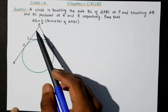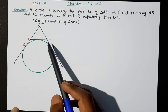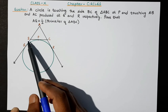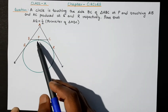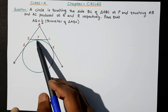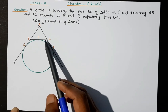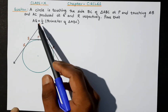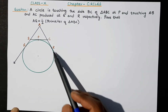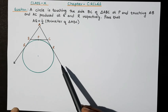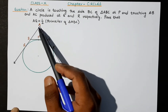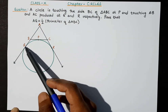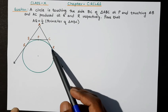So what does this mean? Triangle ABC has the circle touching side BC at point P — that means BC is a tangent. AB and AC are produced, meaning they are extended. The circle touches the extension of AB at point Q, and similarly, the extension of AC at point R.